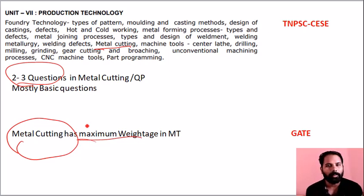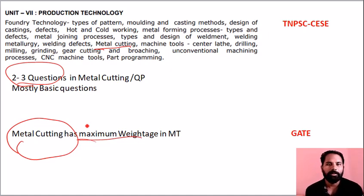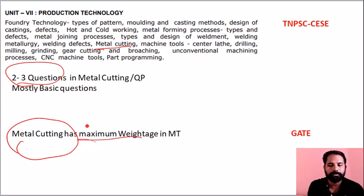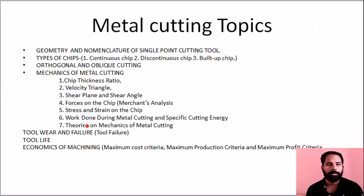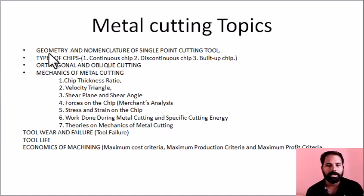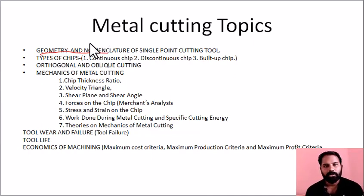In the metal cuttings topic, you will first see the geometry of metal cutting tools. There are 3 reference systems: the ASA system, the ORS system, and the NRS/ISO system.